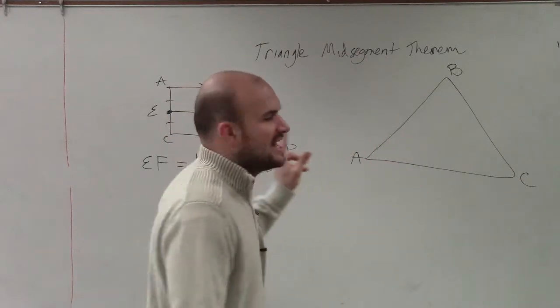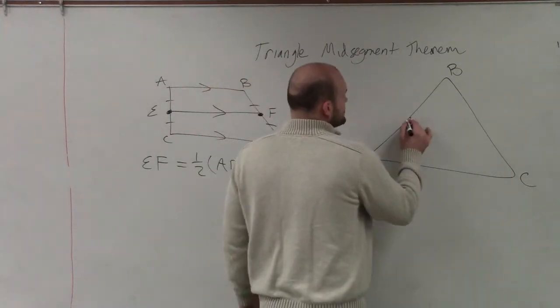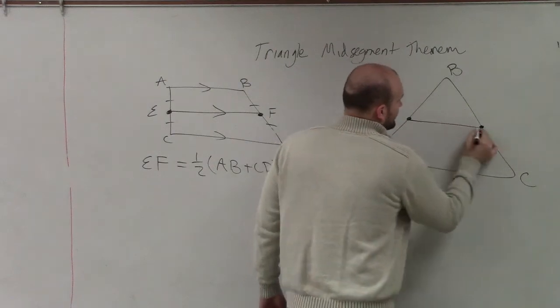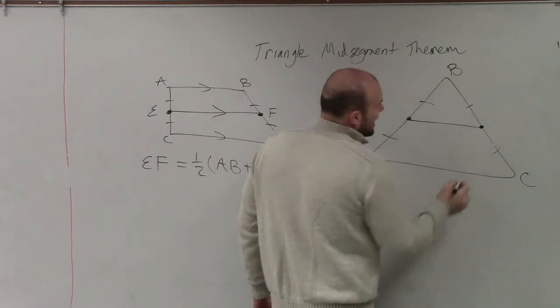If we find the two mid-segments of two of our sides, let's do AB and BC. They're the mid-segments. That means they cut them in half.